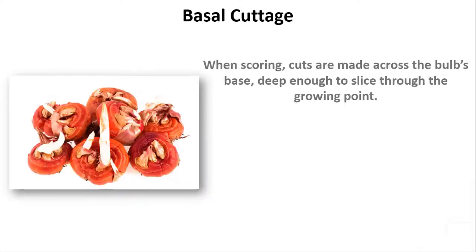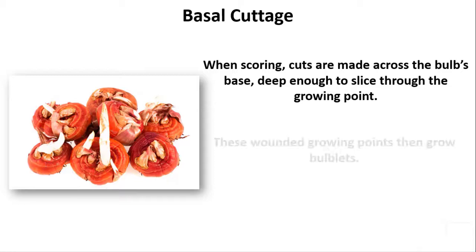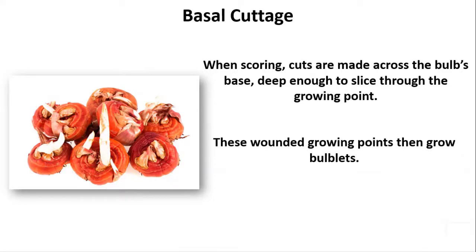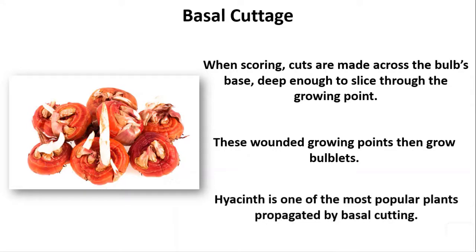When scoring, cuts are made across the bulb's base, deep enough to slice through the growing point. These wounded growing points then grow bulblets. Hyacinth is one of the most popular plants propagated by basal cutting.